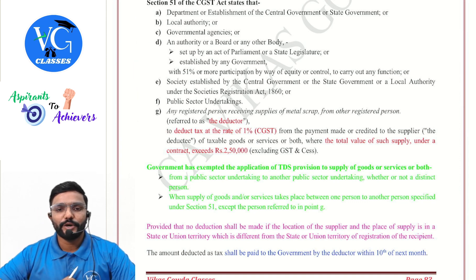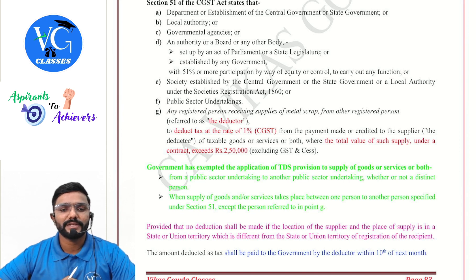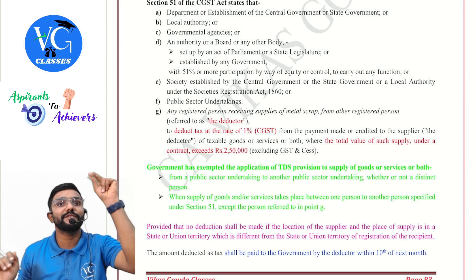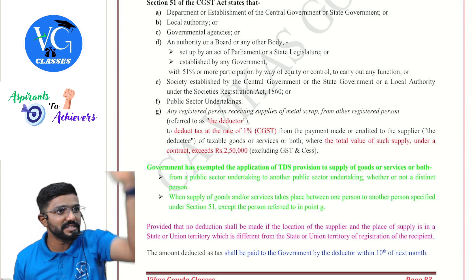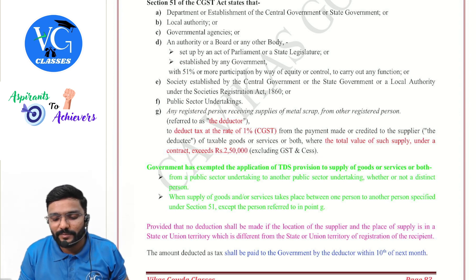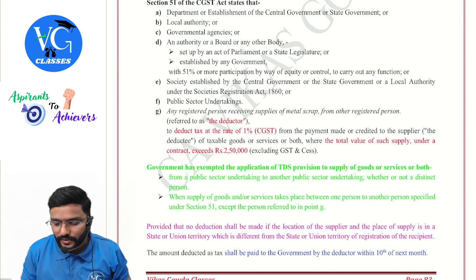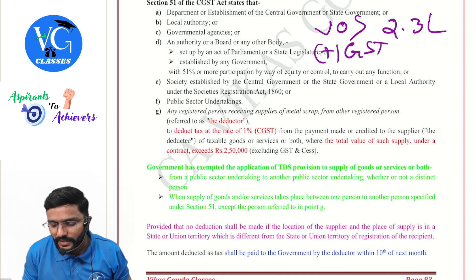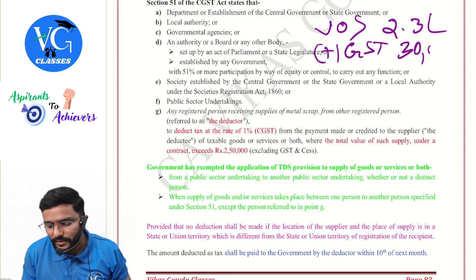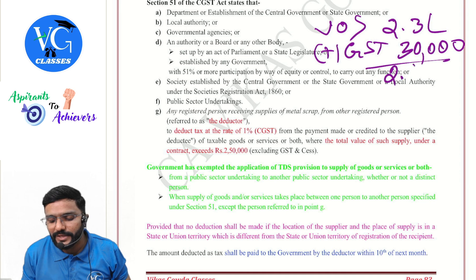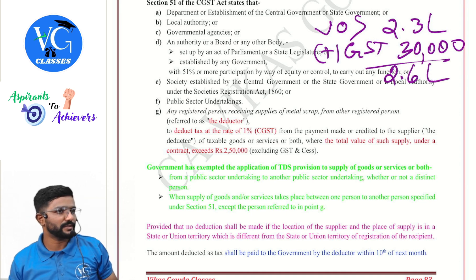The deductor must deduct tax at the rate of 1% CGST from the payment made or credited to the supplier — the deductee — of taxable goods or services or both, where the total value of supply under a contract exceeds ₹2,50,000. Note: ₹2,50,000 is only the value of supply, not including GST. For example, if value of supply is ₹2.3 lakh plus GST of ₹30,000, total is ₹2.6 lakh — no TDS, because the value of supply itself is below ₹2.5 lakh.